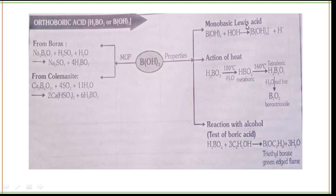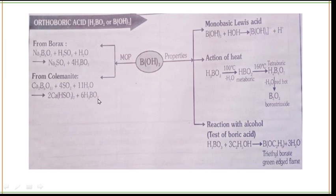Next is orthoboric acid, also known as H₃BO₃ or B(OH)₃. Preparation methods include: first, reacting borax with H₂SO₄ and water to get 4H₃BO₃; second, from colemanite — reacting Ca₂B₆O₁₁ with SO₂ and H₂O to get H₃BO₃.